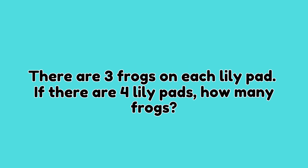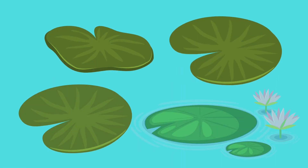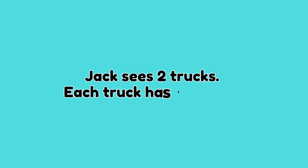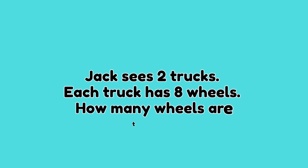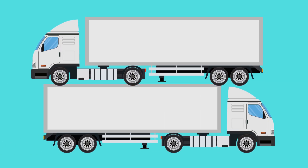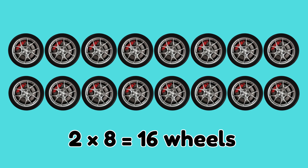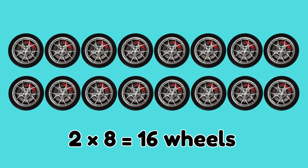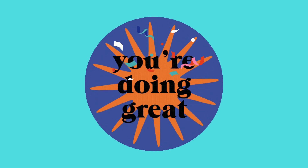There are three frogs on each lily pad. If there are four lily pads, how many frogs? Three times four is equal to twelve — a total of twelve frogs! Jack sees two trucks. Each truck has eight wheels. How many wheels are there? Two times eight is equal to sixteen — sixteen wheels! And that's a wrap on multiplication!